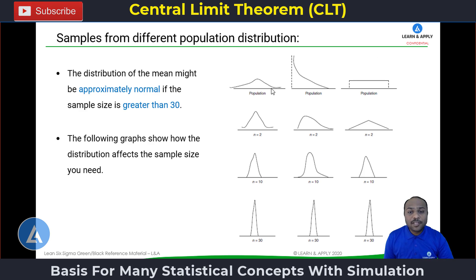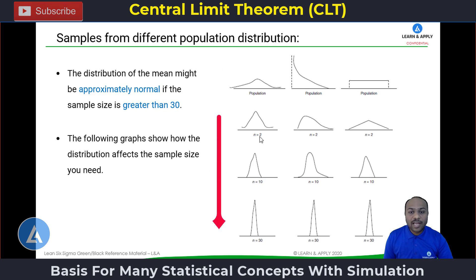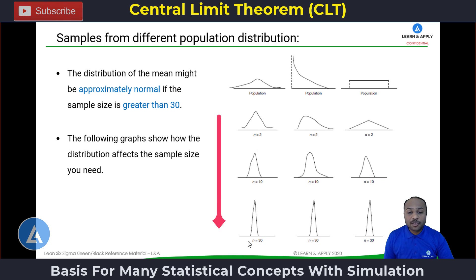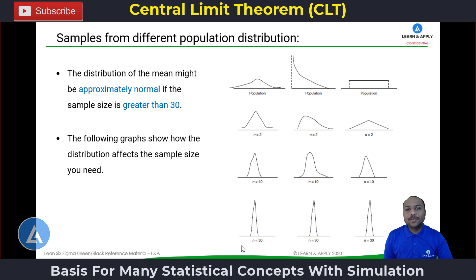On this final important slide, we see three distributions: normal, exponential, and uniform. For n=2 averages, you can see how each distribution behaves. For n=10, the distributions behave somewhat normally. But when you increase the sample size of averages to 30, irrespective of the source distribution, all distributions behave like a normal distribution. This is the basis behind why we always talk about 30 data points — it is the Central Limit Theorem.